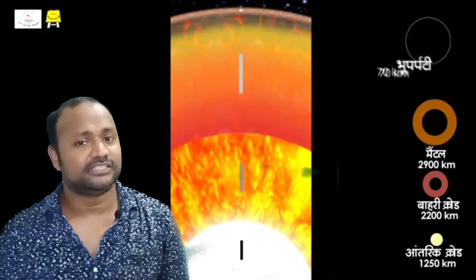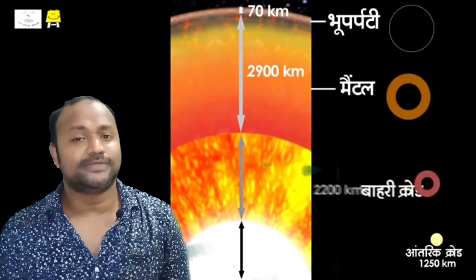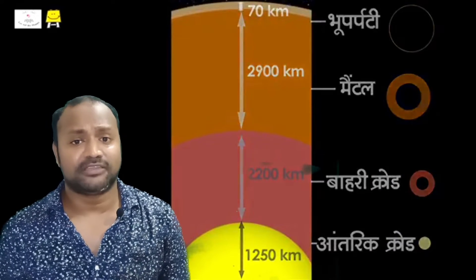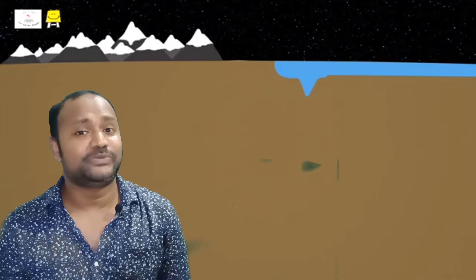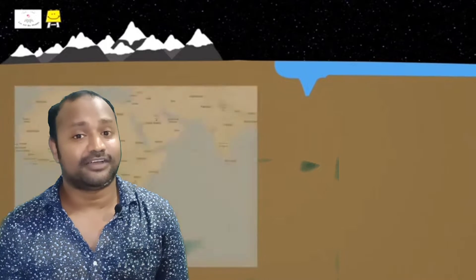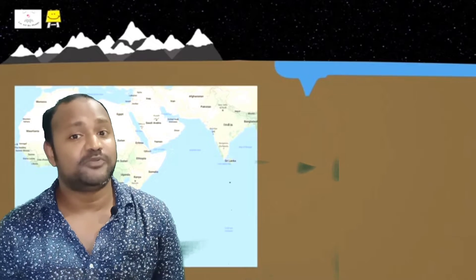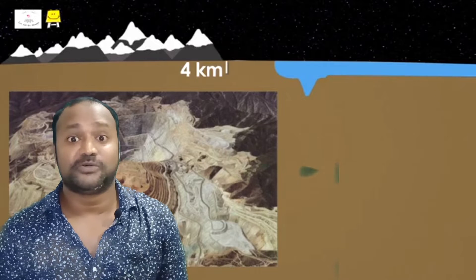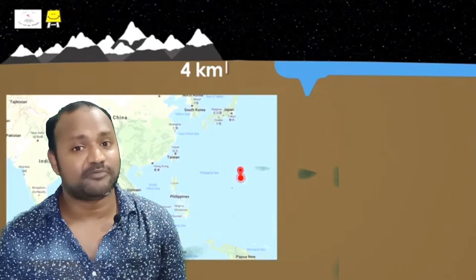The interior of the earth is quite restless — there are always many things happening inside. We may not be able to know about all these movements, but sometimes we get to know about them when there is an earthquake or a landslide. There is something inside the interior of the earth responsible for such types of movements or vibrations on the earth surface.